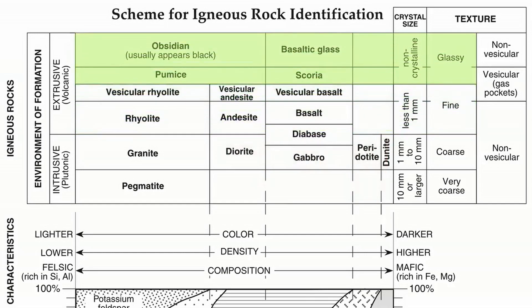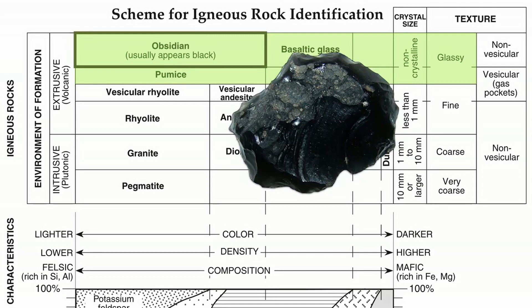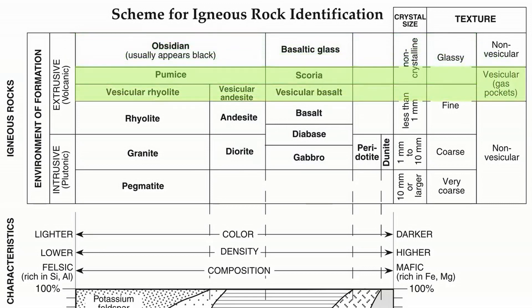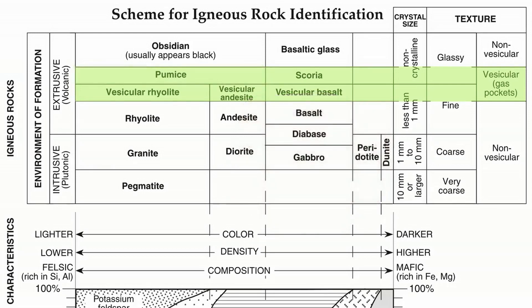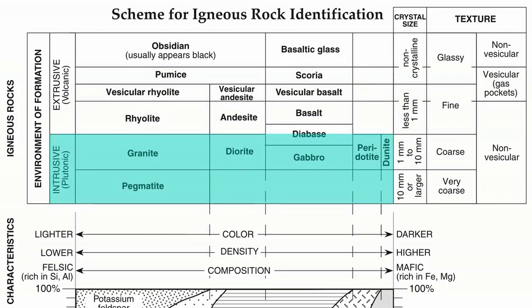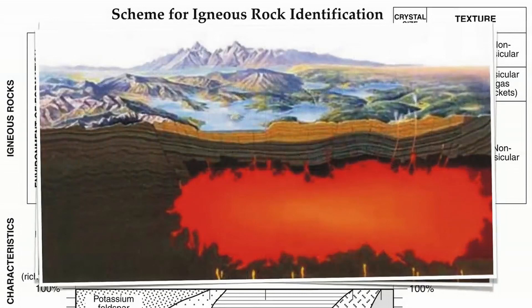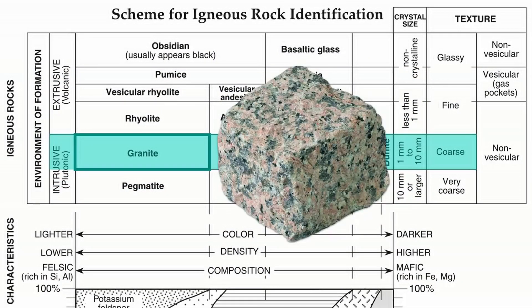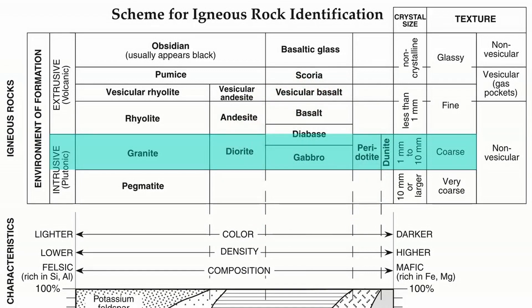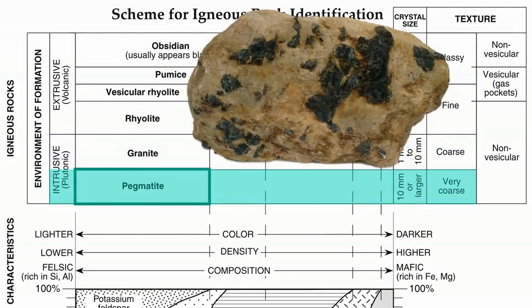We also have rocks that cooled so quickly the crystals are impossible to see — they're non-crystalline or glassy rocks, like this obsidian. Sometimes lava cools quickly enough for little air bubbles to be trapped inside; these rocks are referred to as vesicular, like this sample of pumice. When magma takes a long time to cool deep inside the Earth, we get intrusive igneous rocks. Some will cool slowly enough for crystals to grow between 1 and 10 millimeters, like this sample of granite. Sometimes if the magma cools very slowly, crystals will grow even larger — over 10 millimeters — like this sample of pegmatite.